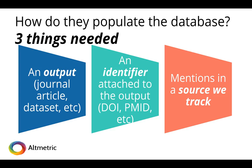How do they populate the database? For the altmetric tool, altmetric.com, you need an output — which could be a journal article, data set, etc. — and then this needs an identifier attached to it. This could be a DOI, a digital object identifier, or a PubMed ID. As long as there is an identifier, it can then be tracked.